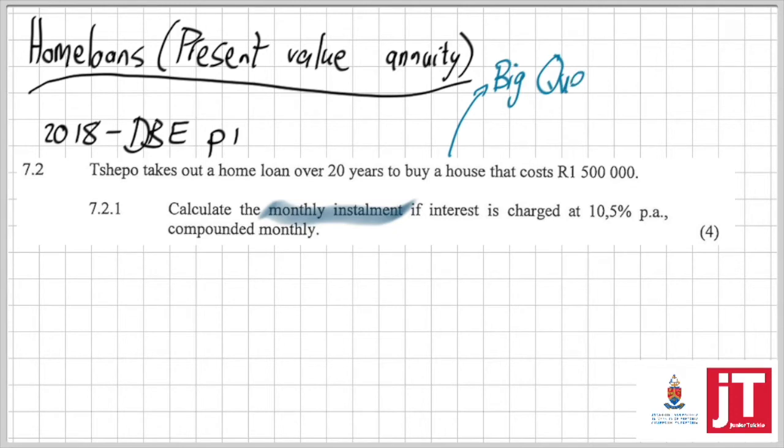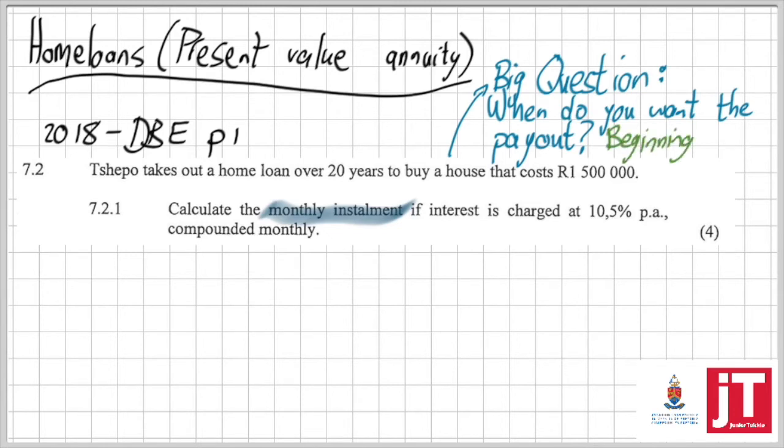But the other big question is then, when do I want to receive the payout? Do I want the payout at the beginning or at the end? Well, I want to receive the money now so that TEPO pays off the seller. In other words, at the beginning, which means I'm going to work with a present value annuity.